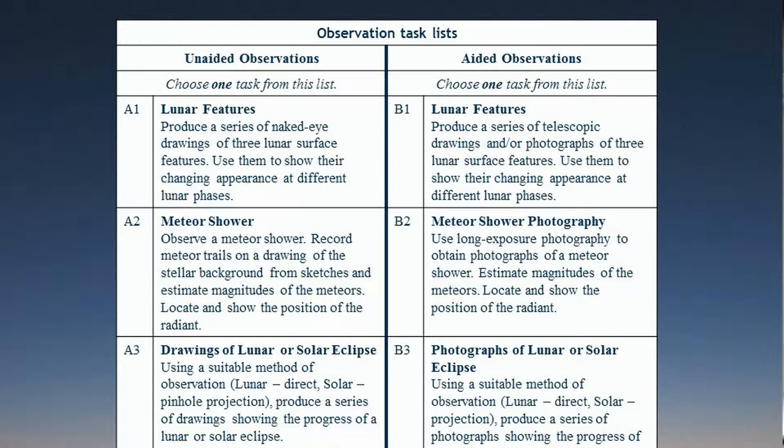Then there's list B, which contains aided tasks, and that involves using some kind of optical equipment. It could be a telescope, binoculars, a camera, all sorts of things. It could be a robotic telescope on the other side of the world.